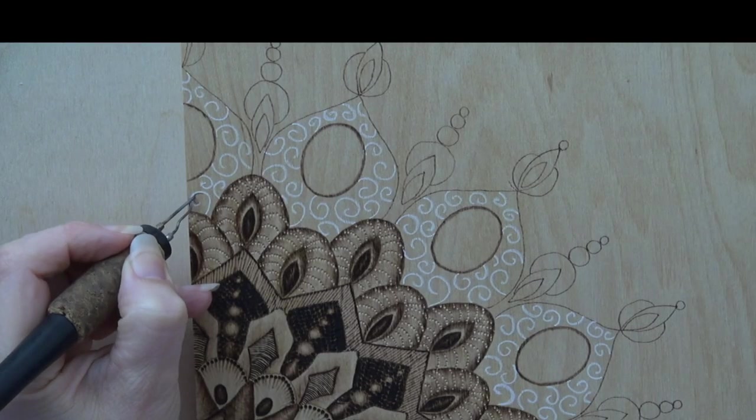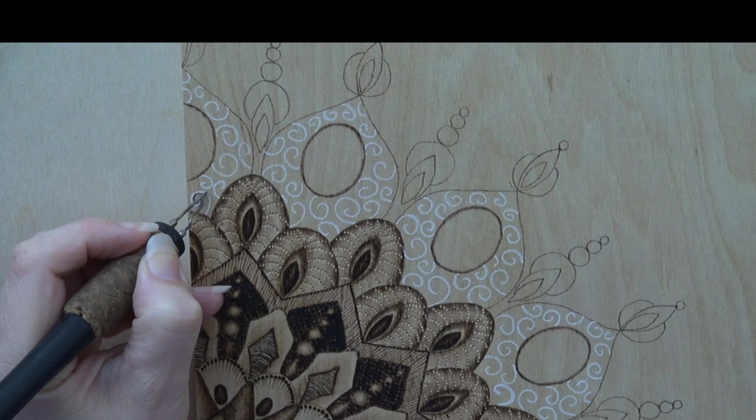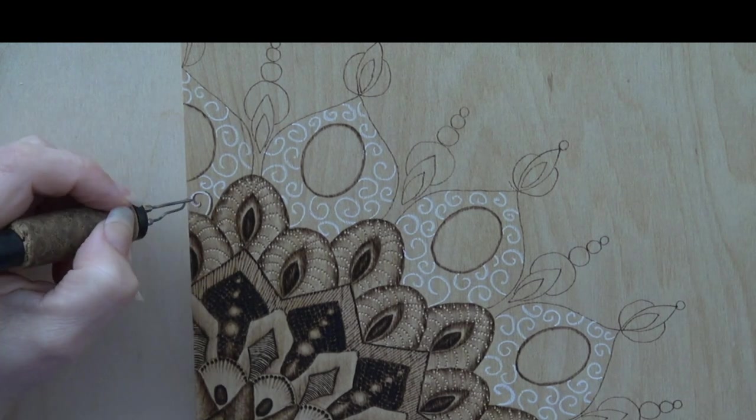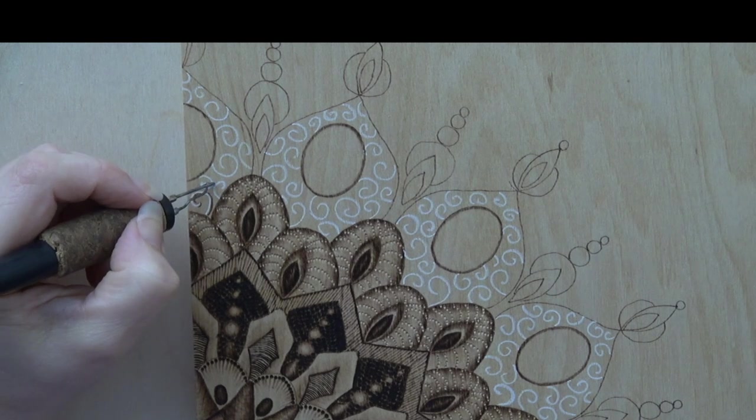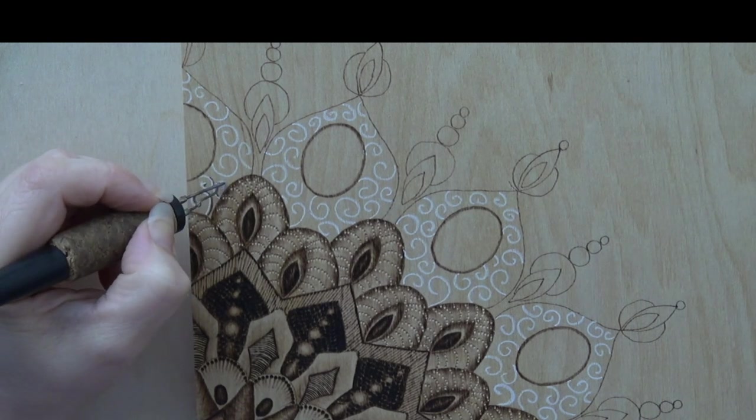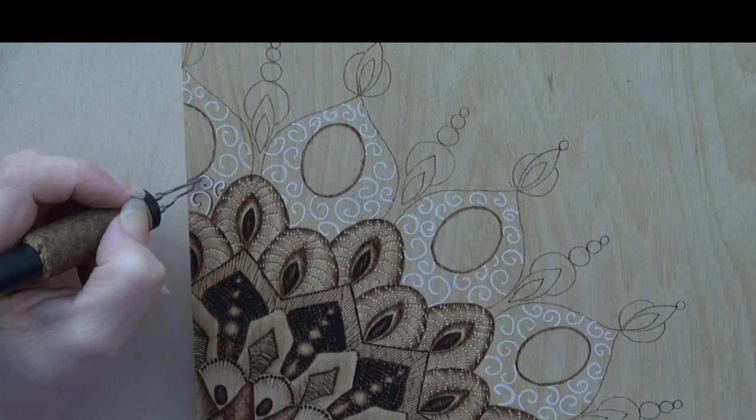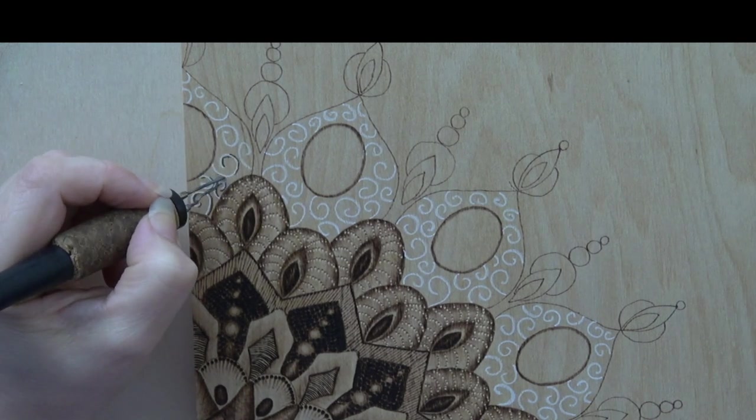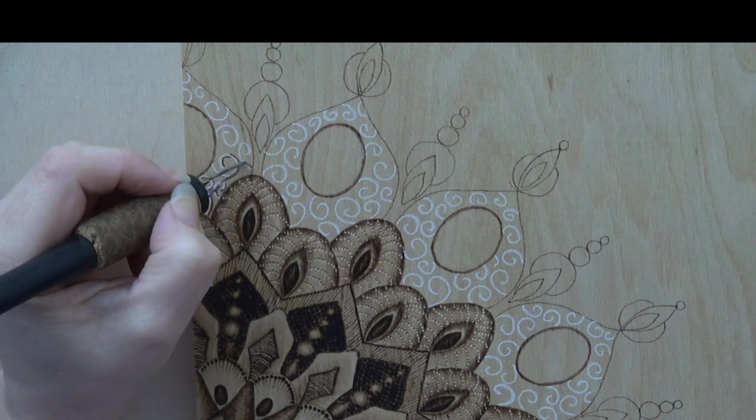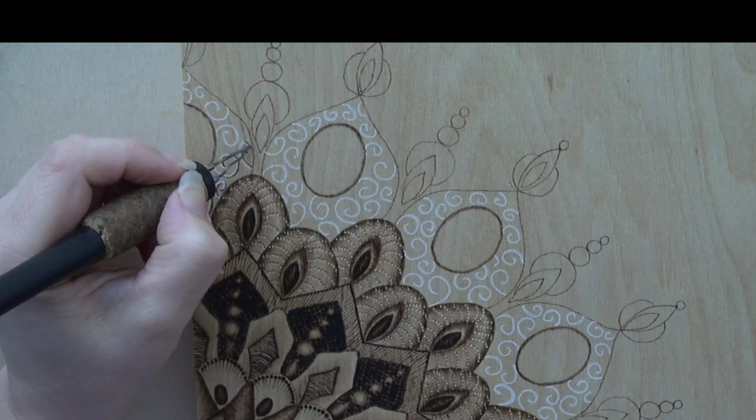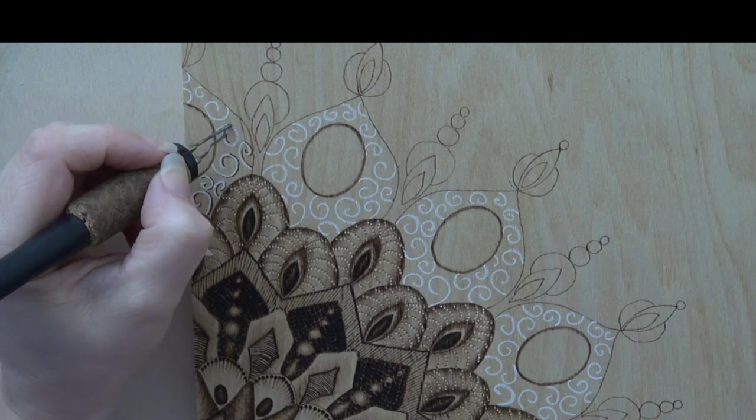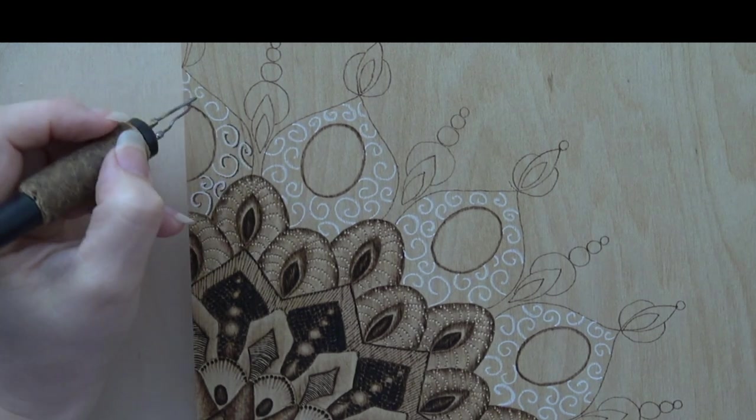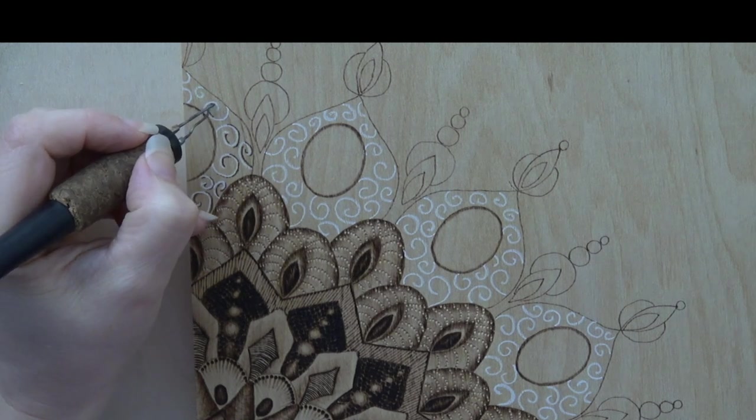Switch to a writer pen tip and burn a dark line along the right edge of the curling lines. Burn the lines only in areas of cast shadows. Let me explain. Visualize the sun being in the upper left corner of the art and the curling lines are raised walls that rise up from the surface of the wood. As the sun strikes the walls it will cast shadows onto the ground behind them. We are burning in those shadows.